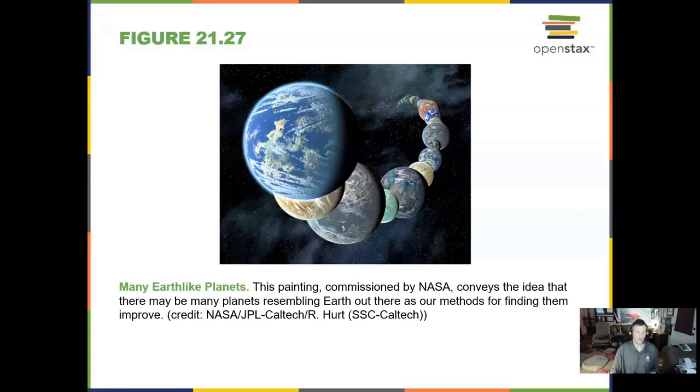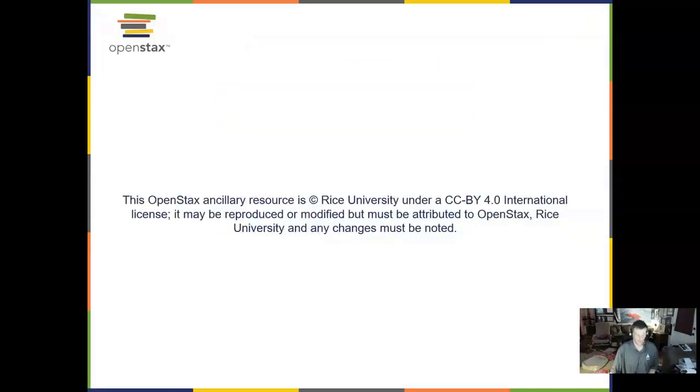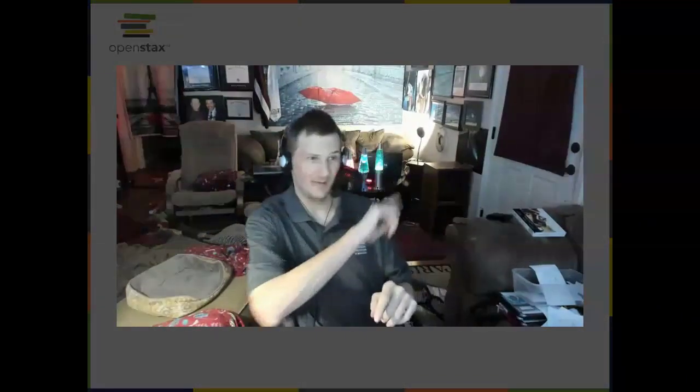There are many Earth-like planets. We are looking for them and finding them with more technology. That does it for chapter 21. Thank you for joining me and my hungry dogs. They are hungry for my pizza. See you next time.